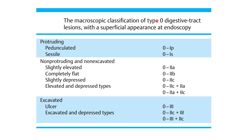Type 0 lesions are amenable to endoscopic treatment — when you remove them, nothing will remain. They are classified into protruding lesions, non-protruding non-excavated lesions, and excavated lesions.